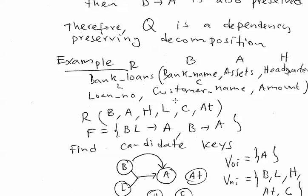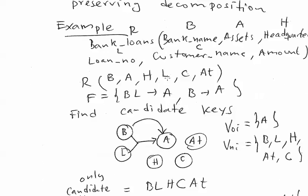Here is the table bank loans, which I'll call R. The attributes are B (bank name), A (some attribute), H (headquarters), L (loan number), C (customer name), and AT (amount). This is the table F with two functional dependencies. What we want to check is the normal form of this table. Normalization is based on functional dependencies, and with them we can inspect the current normal form of the table. For that, we need to find the candidate keys.